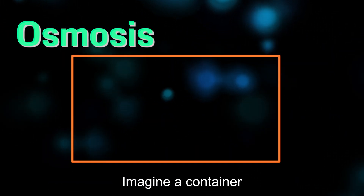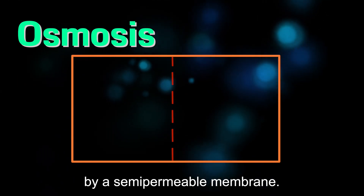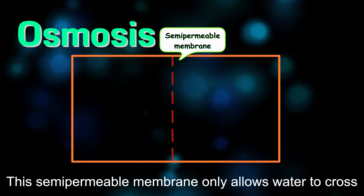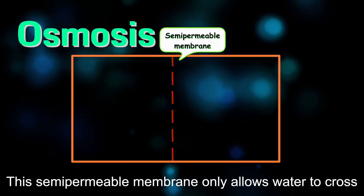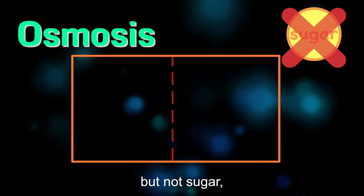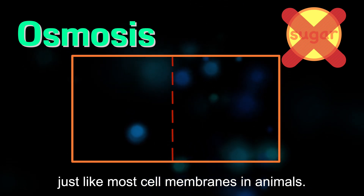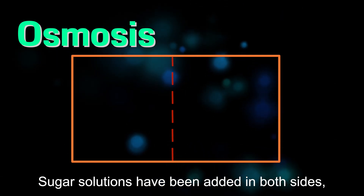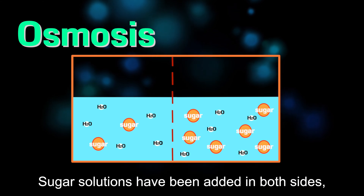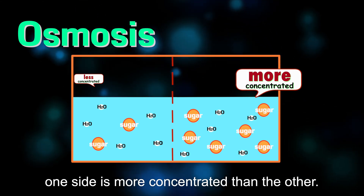Imagine a container that has been divided in half by a semi-permeable membrane. This semi-permeable membrane only allows water to cross but not sugar, just like most cell membranes in animals. Sugar solutions have been added on both sides, and one side is more concentrated than the other.